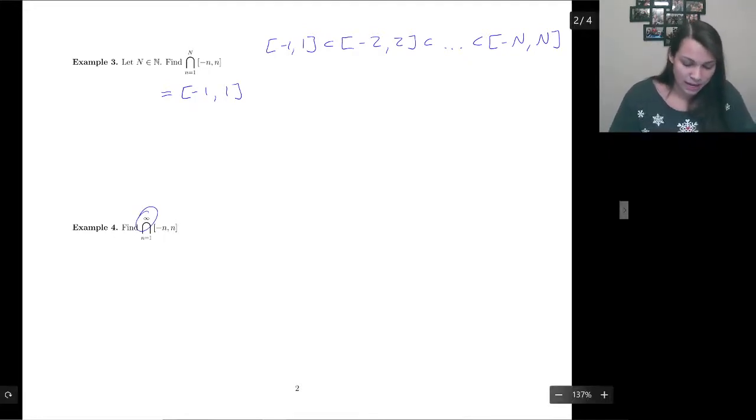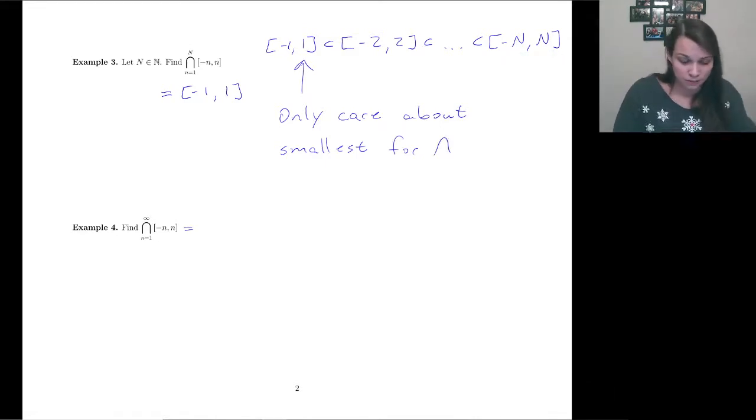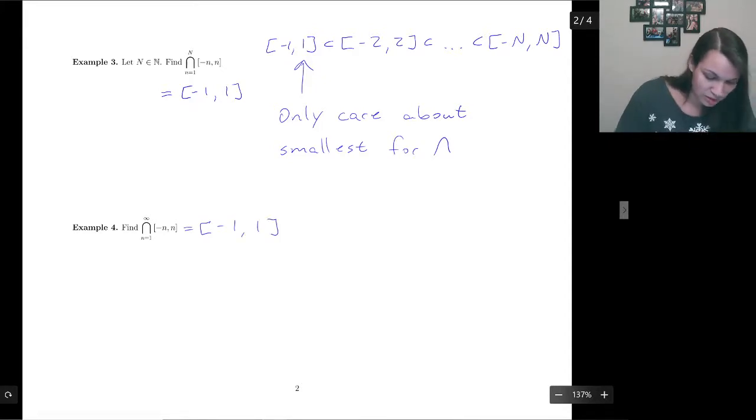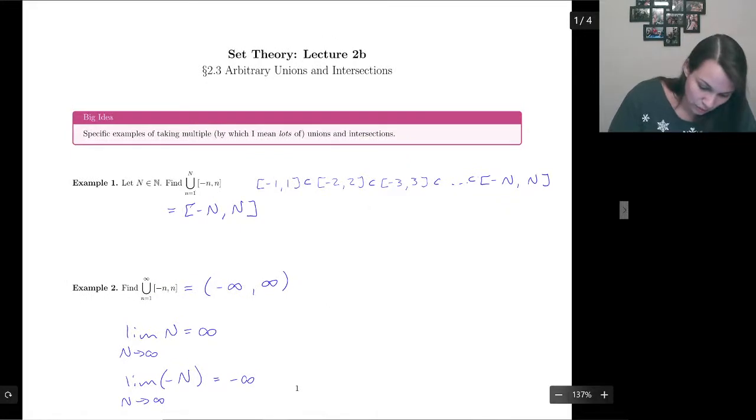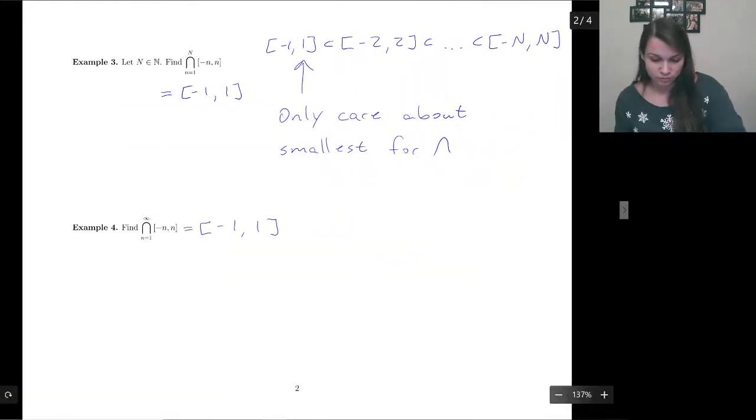So now, when we take an infinite intersection, we don't care where this big one goes. We only care about the smallest. So we only care about smallest for the intersections. So this guy can get as big as he wants. He could go all the way up to all of infinity to negative infinity, but we only care about what everyone has in common, which is that smallest one. And then we can leave a similar note here. We only care about largest for the union. And again, this is only because they're nested. They're contained inside of each other.